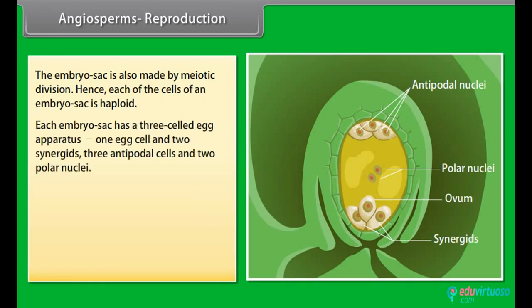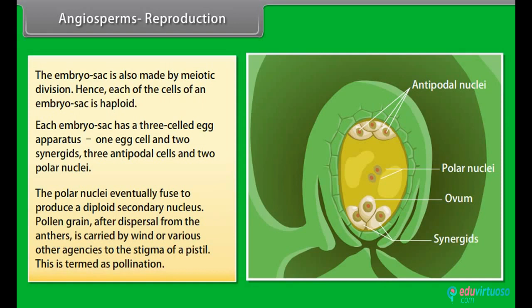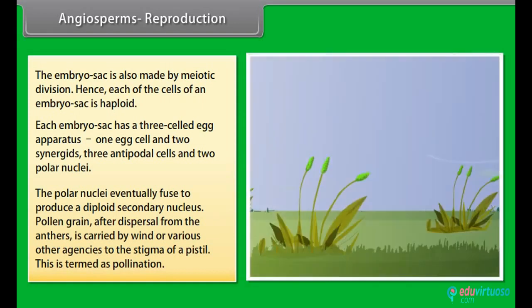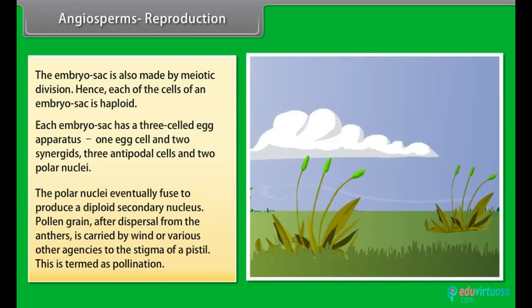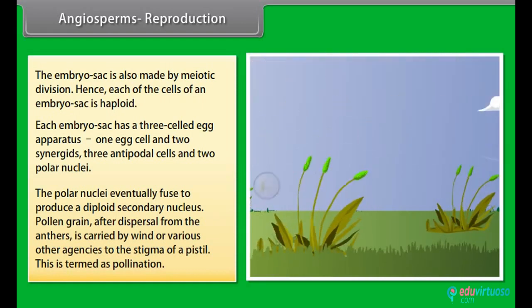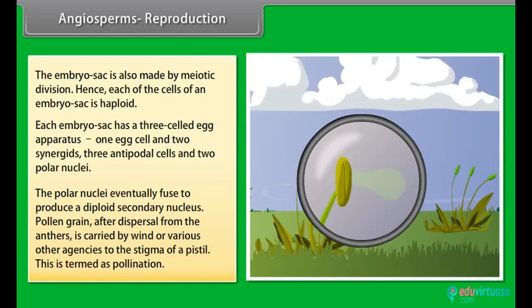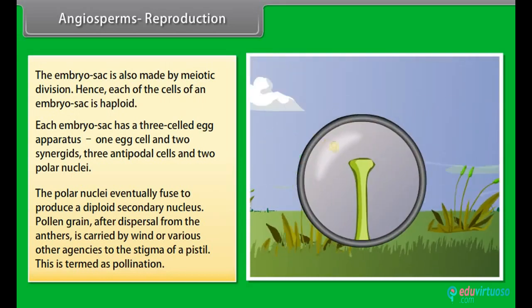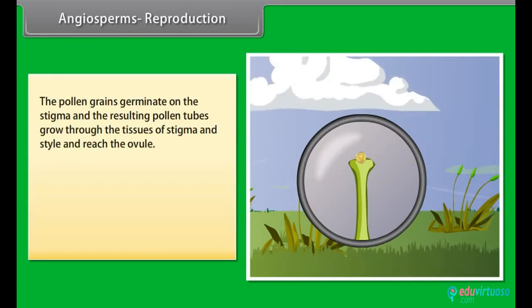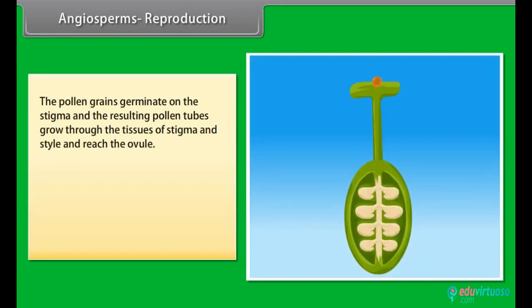Each embryo sac has a three-celled egg apparatus — one egg cell and two synergids — three antipodal cells, and two polar nuclei. The polar nuclei eventually fuse to produce a diploid secondary nucleus. Pollen grains, after dispersal from the anthers, are carried by wind or various other agencies to the stigma of a pistil. This is termed pollination.